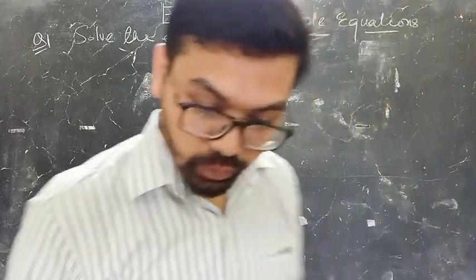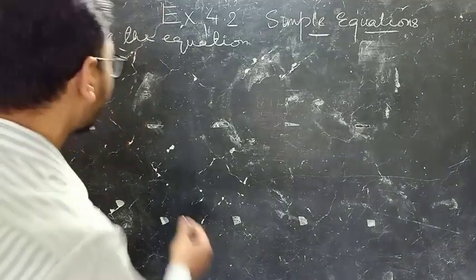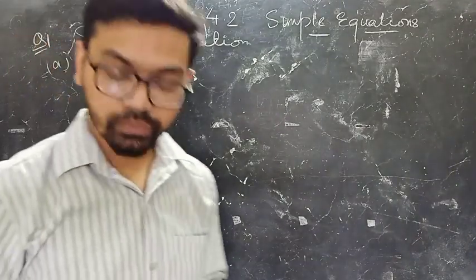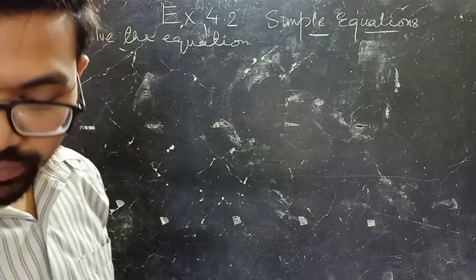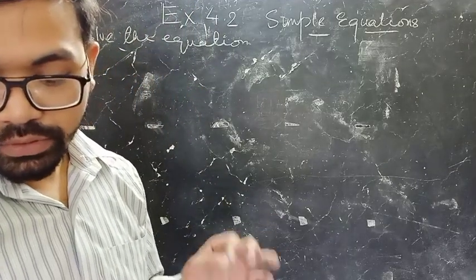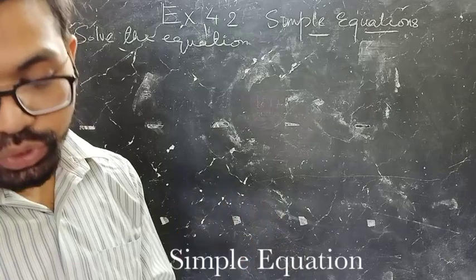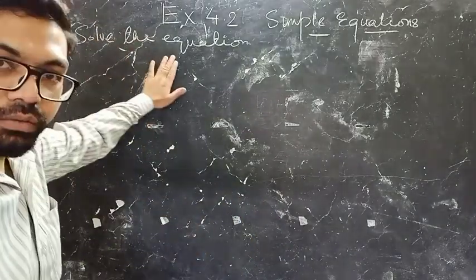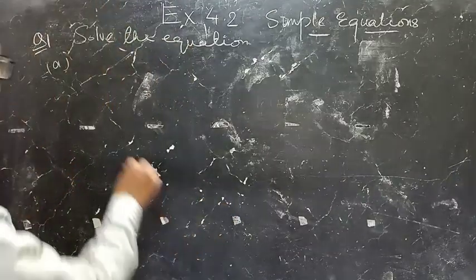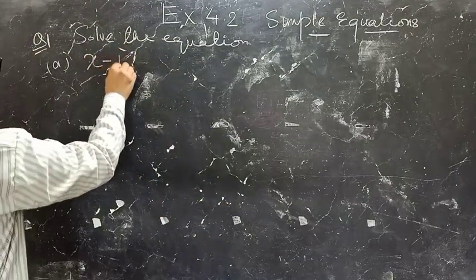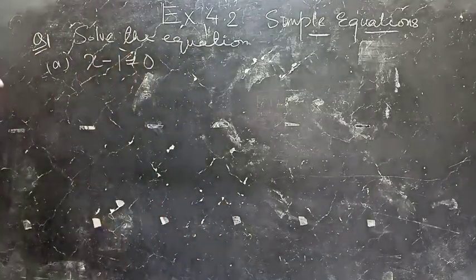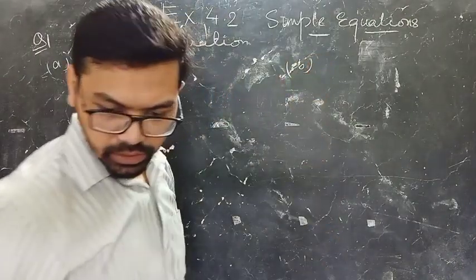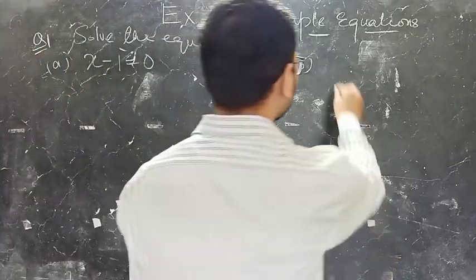So let us take one example. This is question number 1, part A of exercise 4.2. The question is: give the first step you will use to separate the variables and then solve the equation. So the equation is x minus 1 is equal to 0. The next example is x plus 1 is equal to 0.